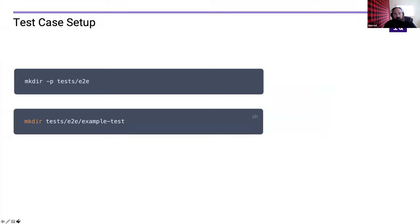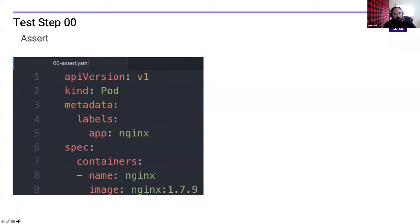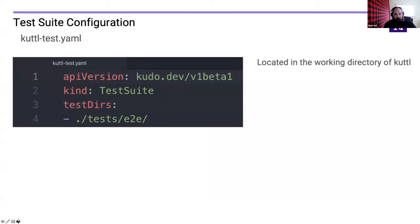What does your first Cuddle test look like? First, set up a test case directory — this might be in your Helm chart, your operator repository, or a folder of customized stuff. Once we have our folder, we create our first step: instead of a test step, we just have a pod and this will implicitly create it. We're saying we want an nginx 1.7.9 pod with one container. Then we write out the same thing as an assertion, and make sure we have a test suite object listing the directories to include when Cuddle looks for tests to run.